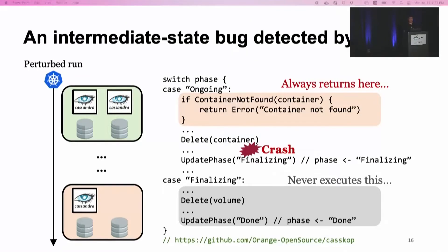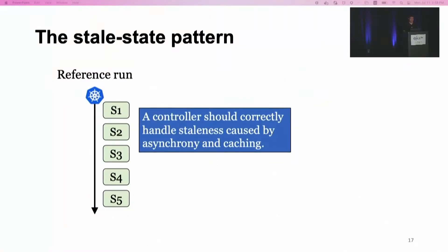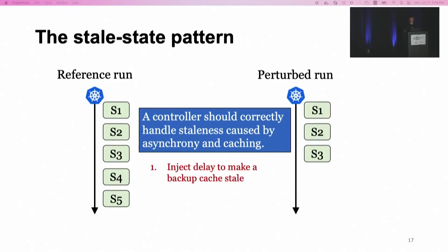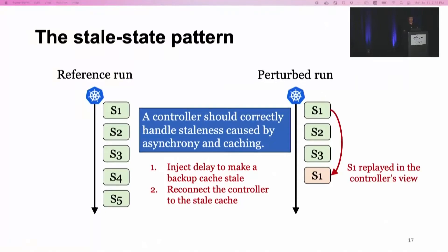Intermediate state is actually the simplest pattern we are testing. The second pattern is the stale state pattern. This tests whether the controller correctly handles staleness caused by asynchrony and caching. For performance reasons, Kubernetes controllers usually read the cluster state from a local cache instead of directly reading from the strongly consistent etcd, and the cache can be stale. To test this, SIEVE first injects a delay to make the backup cache stale, then reconnects the controller to this stale cache, placing the stale state in the controller's view. Seeing the stale state, the controller should not do anything wrong.